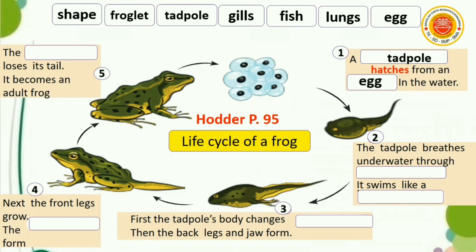Yang kedua, berudu atau kecebong bernafas di bawah air melalui insang. Berudu atau kecebong berenang seperti ikan. Soal nomor tiga, tubuh berudu atau kecebong berubah — kemudian kaki belakang dan rahang berudu juga berubah. Apa yang berubah? Bentuknya.